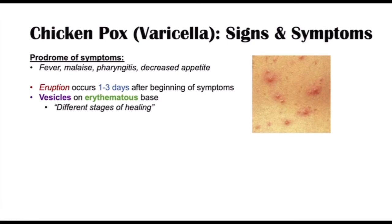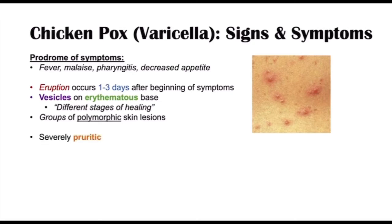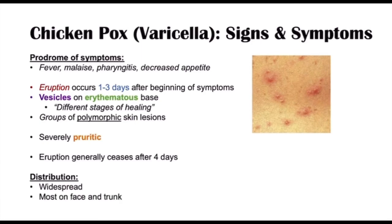Because there are successive groups of vesicles erupting at different times, they are all healing at different times, and we see different stages of healing. This is a key characteristic in distinguishing chickenpox from other types of skin lesions — we see groups of polymorphic skin lesions, meaning the groups all look different. The eruption generally ceases after about four days, and the vesicles can be widespread, but most of the time they are on the face and the trunk.